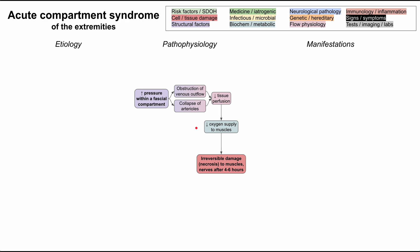So with very high pressure inside a fascial compartment, you obstruct venous outflow and collapse arterioles, decreasing tissue perfusion, leading to low oxygen, ischemia, and irreversible damage through necrosis. All of the manifestations we'll discuss stem from this pathophysiology.